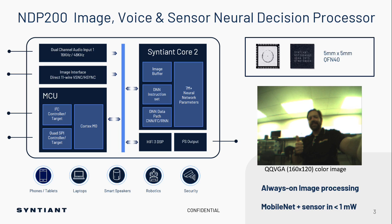What we're announcing today is the NDP 200 — our neural decision processor for image, voice, and sensor processing. The idea behind this device is our custom Synthian Core 2. It's our neural decision processor, able to execute neural networks natively on the core. We're adding periphery to make it a useful system. In the top left corner you can see our standard audio interfaces, but we've also baked in the image interface, so we can directly talk through the DVP interface and pull images directly into our neural core and provide inference on those. We have peripheral controllers — I2C controller and target, SPI controller and target — so we can boot from flash, talk to just about any sensor or PHY control, and pull in the control plane and data for image. We have a HiFi 3 DSP on board, so we can provide ISP functionality.